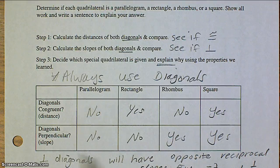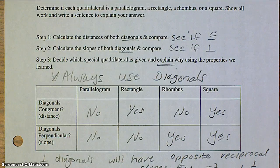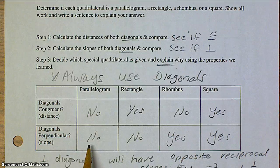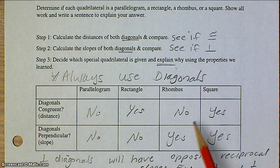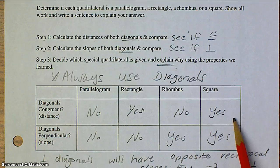This chart recaps the special properties of each quadrilateral. If the diagonals are not congruent or perpendicular, it's a parallelogram. If they are congruent but not perpendicular, it's a rectangle. If they're not congruent but they are perpendicular, that would be a rhombus. And if they are both congruent and perpendicular, that would be a square.